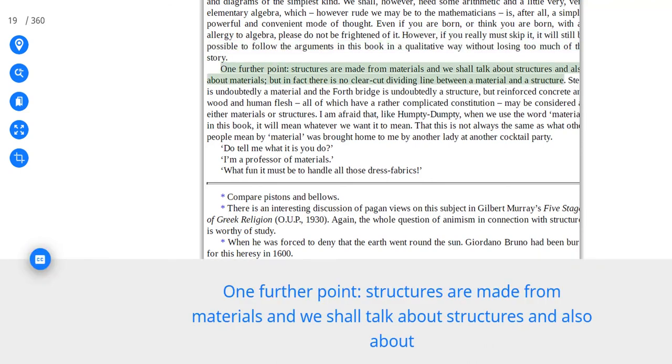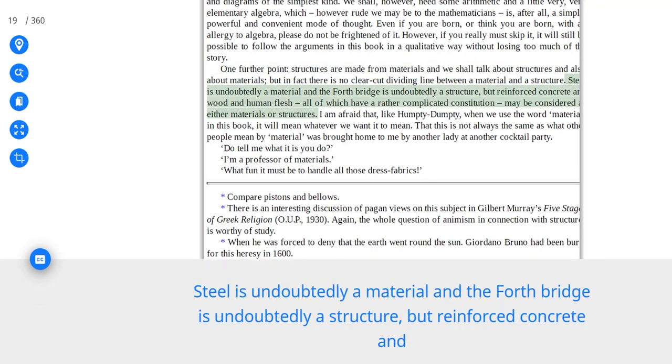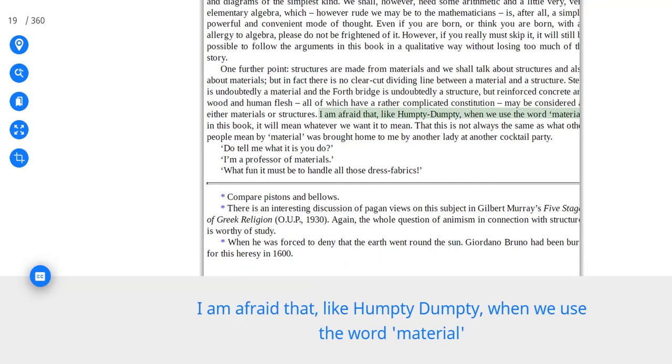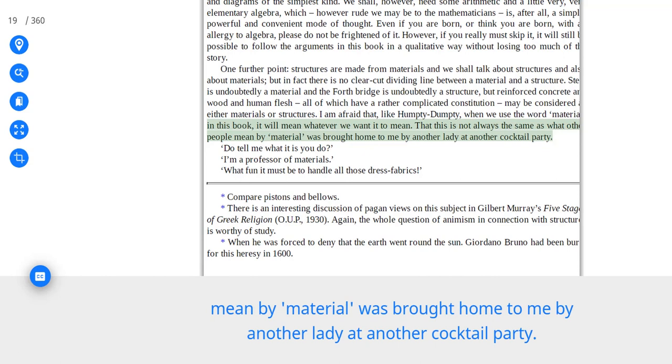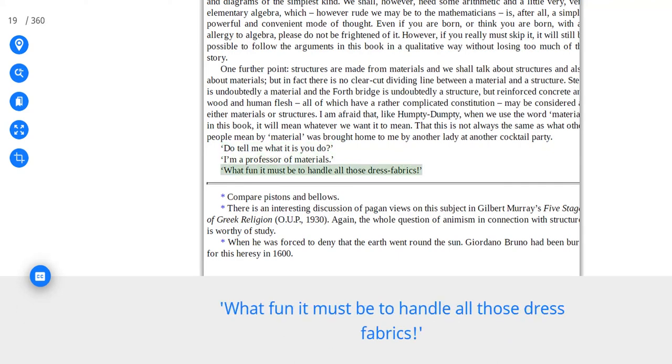One further point. Structures are made from materials and we shall talk about structures and also about materials, but in fact there is no clear-cut dividing line between a material and a structure. Steel is undoubtedly a material and the Forth Bridge is undoubtedly a structure, but reinforced concrete and wood and human flesh, all of which have a rather complicated constitution, may be considered as either materials or structures. I am afraid that, like Humpty Dumpty, when we use the word material in this book, it will mean whatever we want it to mean. That this is not always the same as what other people mean by material was brought home to me by another lady at another cocktail party. Do tell me what it is you do. I'm a professor of materials. What fun it must be to handle all those dress fabrics.